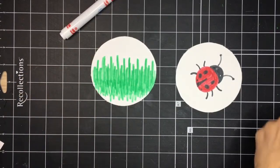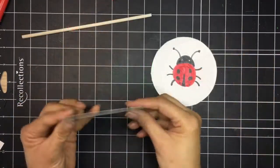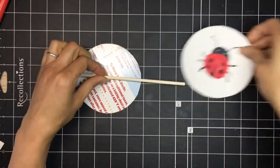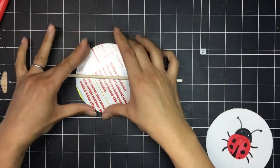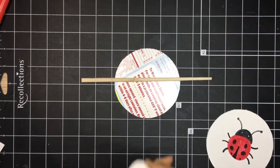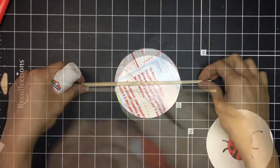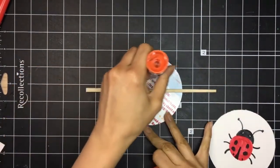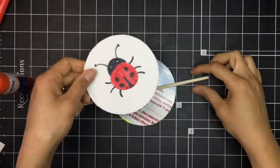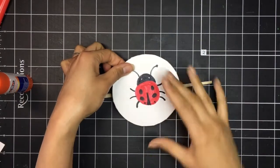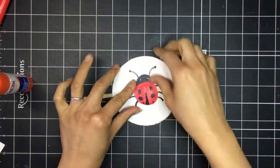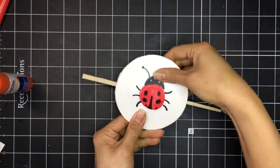Take the grass circle and flip it over so the grass side is facing down and the image is facing down. Take a chopstick and place it horizontally across the circle. Using a glue stick, apply glue to the back of the circle. Take the ladybug circle and place it on top. Press the ladybug circle on top of the grass circle so the glue sticks to it.